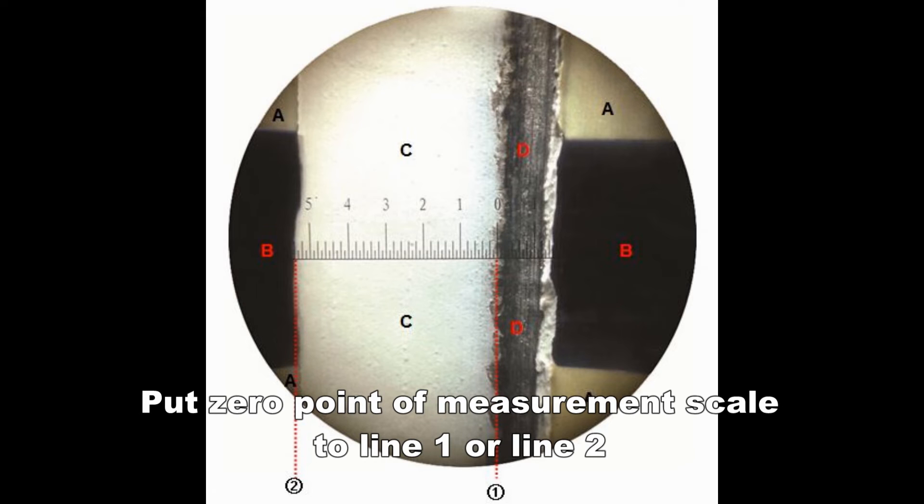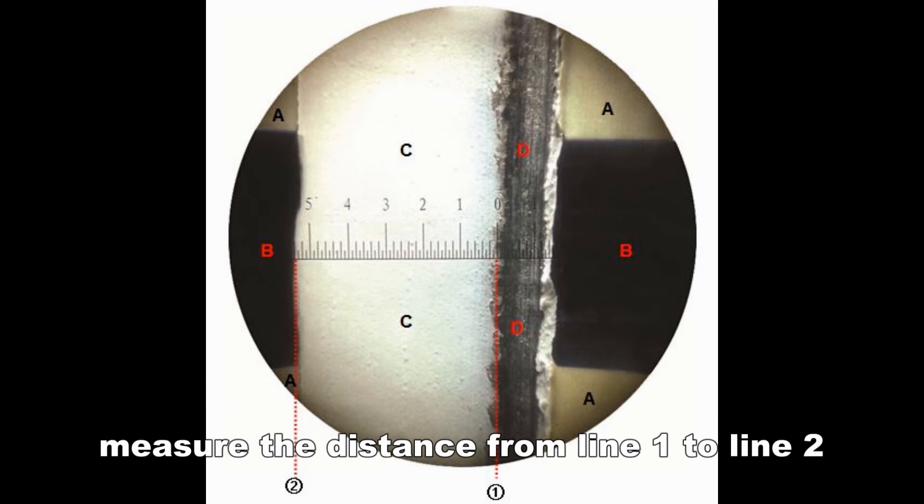Put the zero point of the measurement scale to line 1 or line 2. Measure the distance from line 1 to line 2.